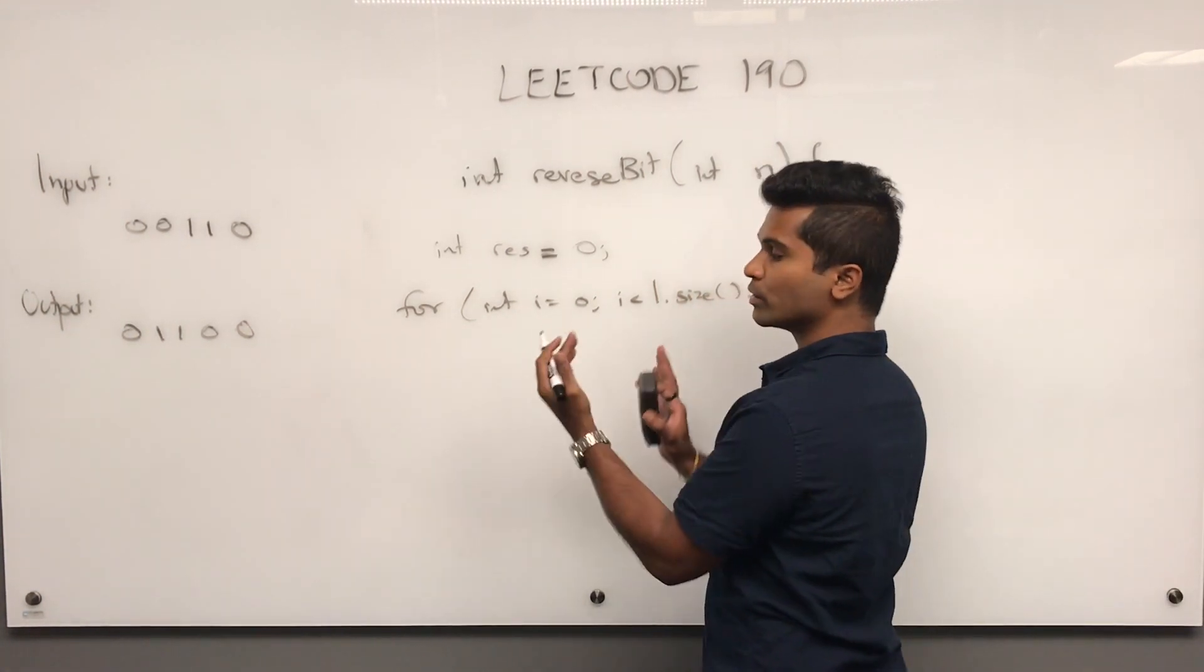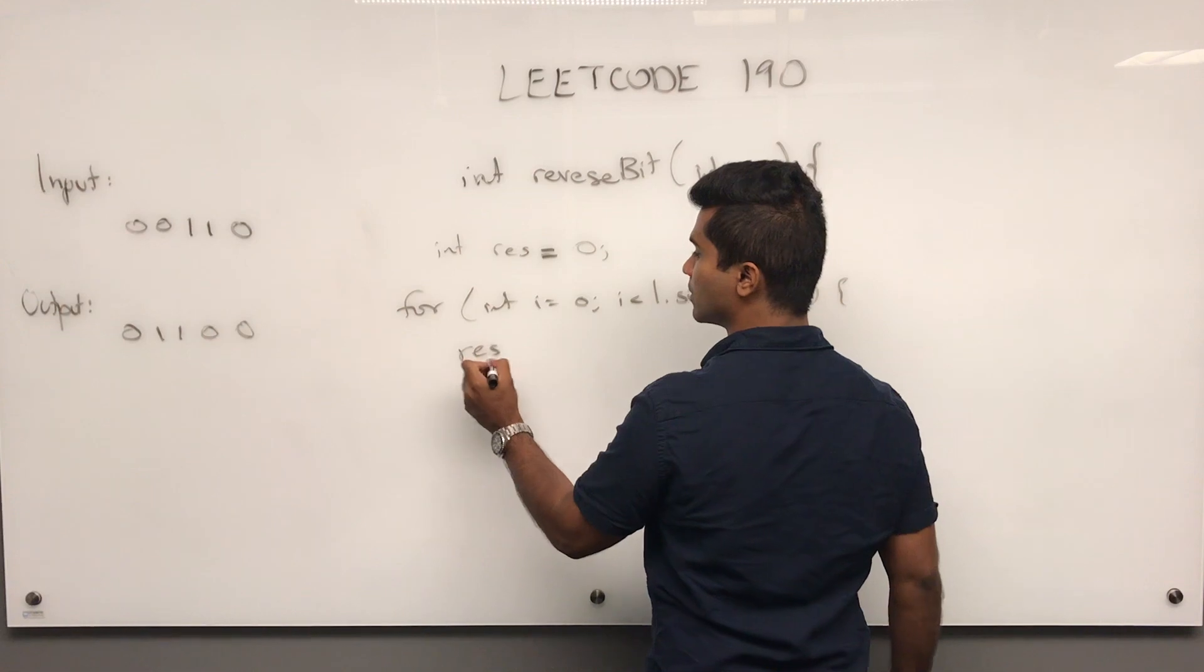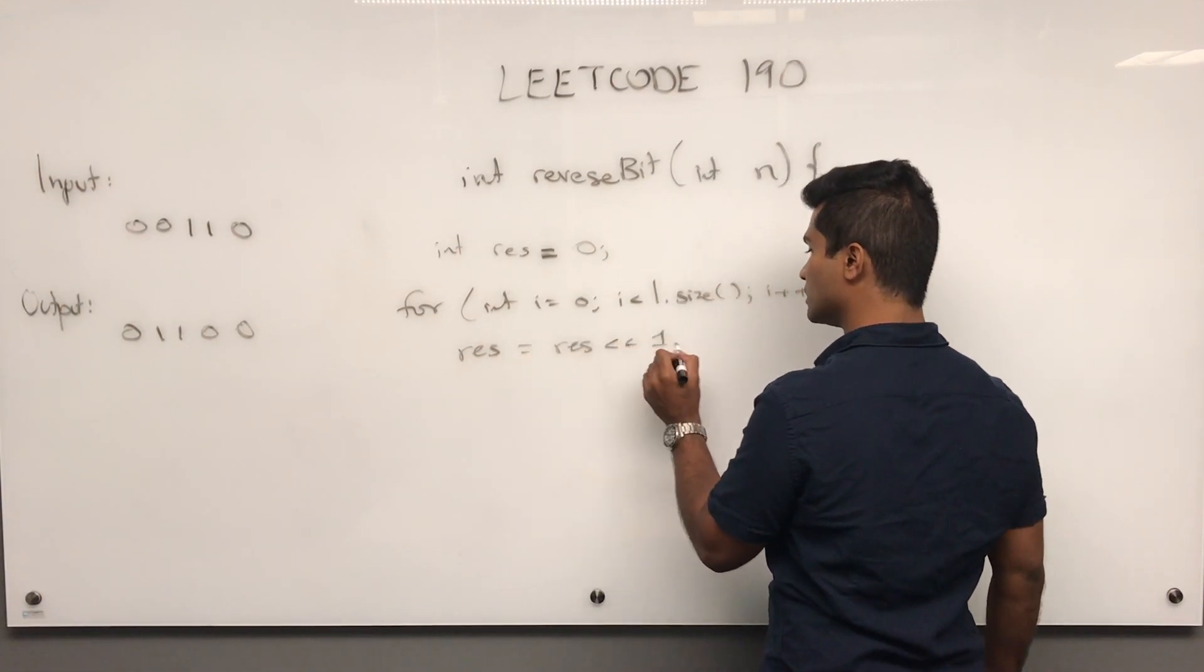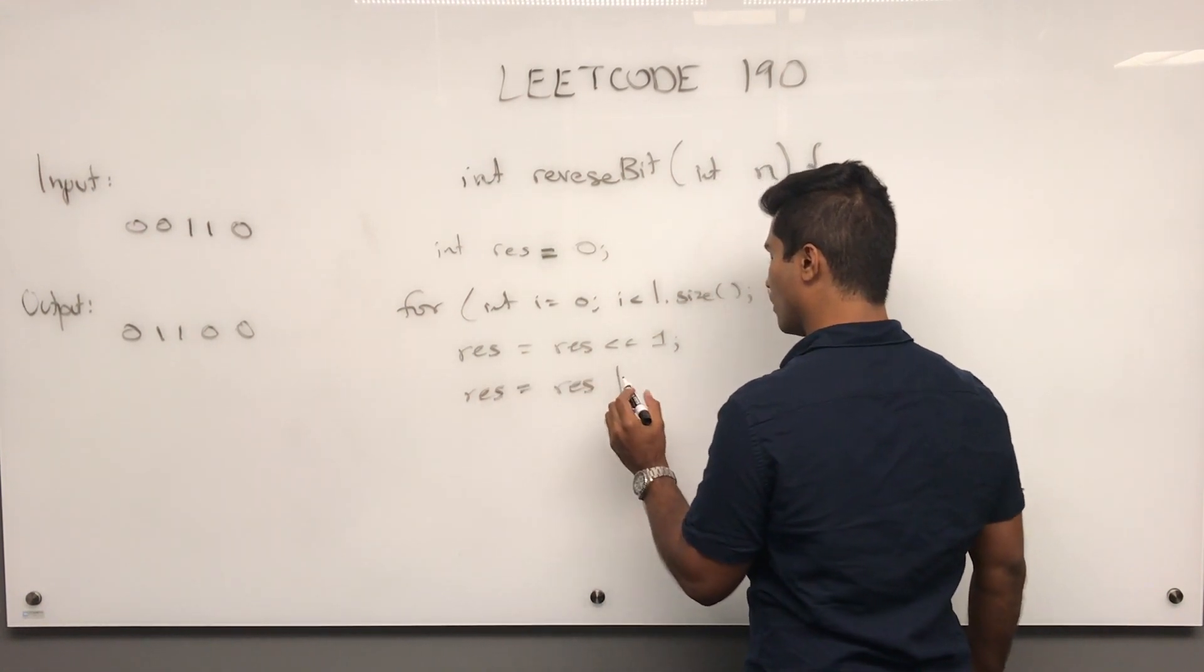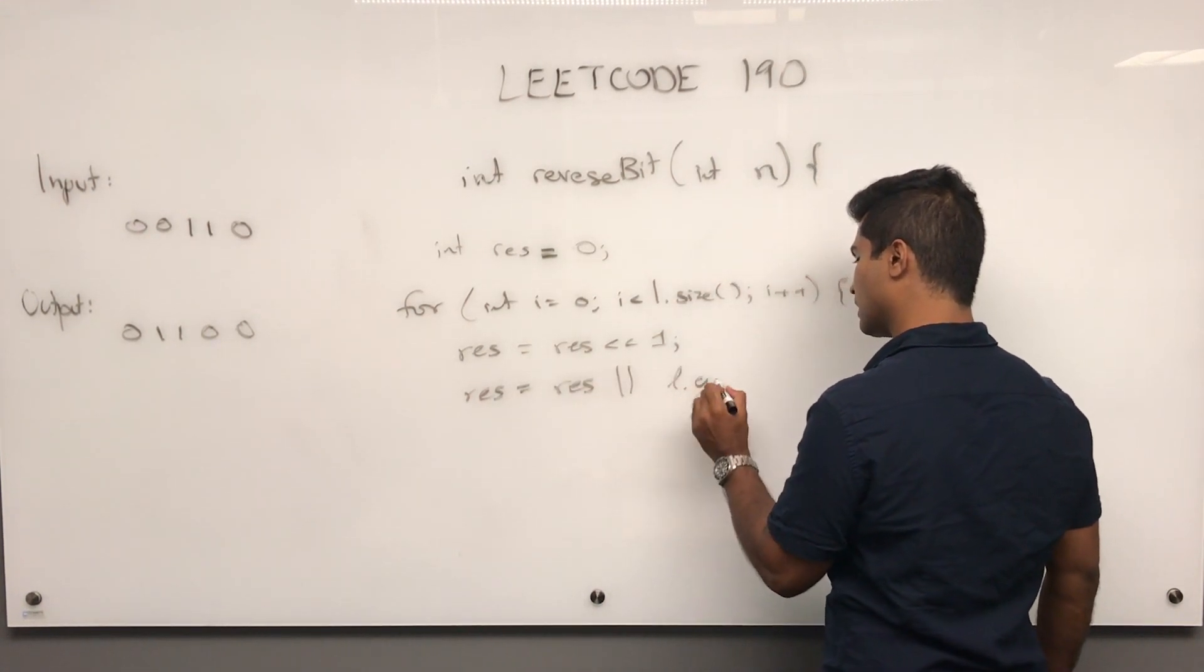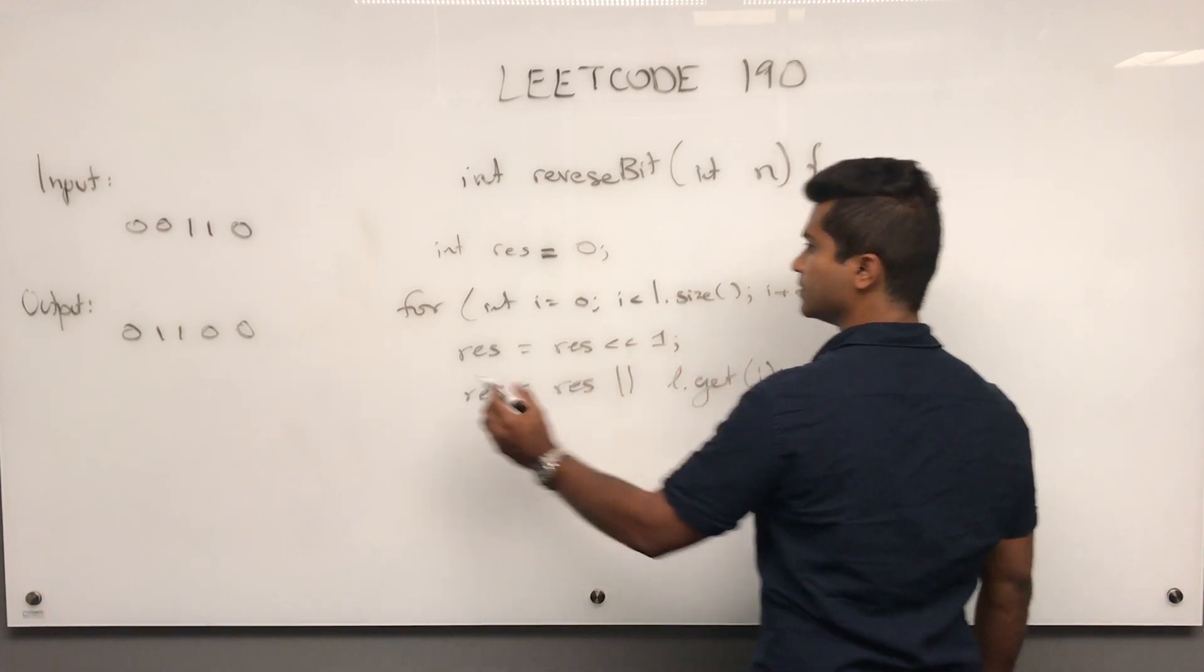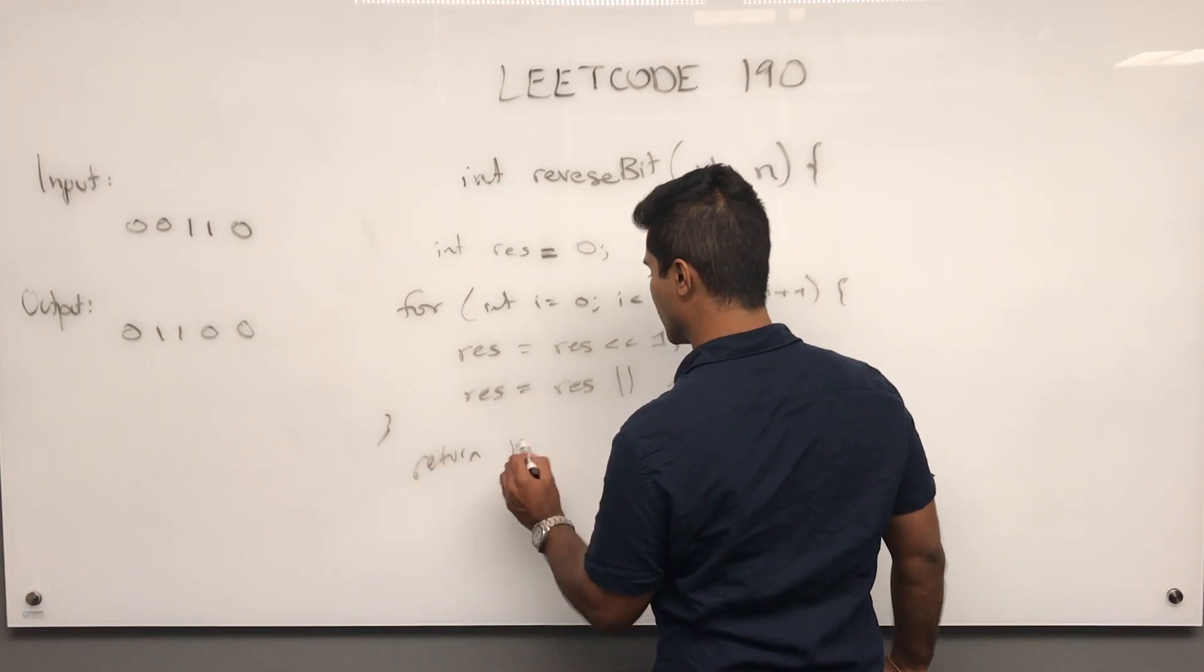Remember, we always push it out because we're inserting something new. So res is pushed left once. Then res equals res OR l.get(i). Then we return result.